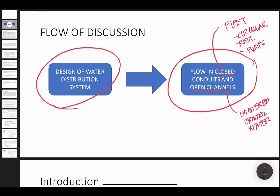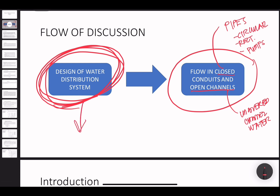After discussing how to properly design our system to be able to distribute water to the household, considering the number of population and how much water they need based on population, we can then proceed to the design for pipelines, particularly the closed conduits and open channels. What we will be discussing this day is just the first part, and the rest of the discussion will follow.